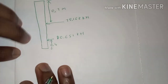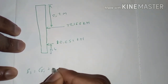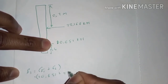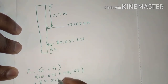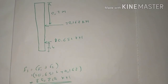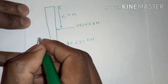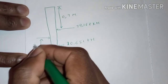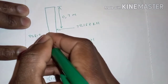The total force is F_total = F₁ + F₂ = 0.651 + 79.168 = 79.819 kN. We need to find where this total force acts. We label its position as x from the bottom — this is our unknown.